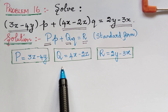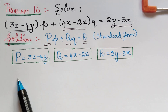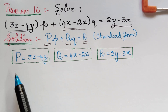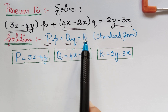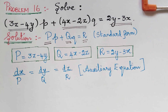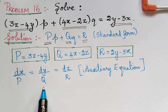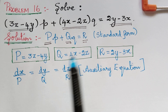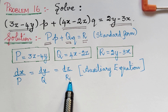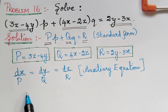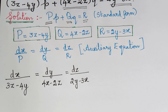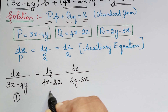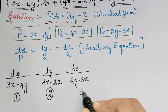After writing the values of P, Q, and R, we write the auxiliary equation of the Lagrange's partial differential equation, which is dx/P = dy/Q = dz/R. We substitute the values of P, Q, and R into this auxiliary equation. Let us mark the first ratio as 1, the second ratio as 2, and the third ratio as 3.